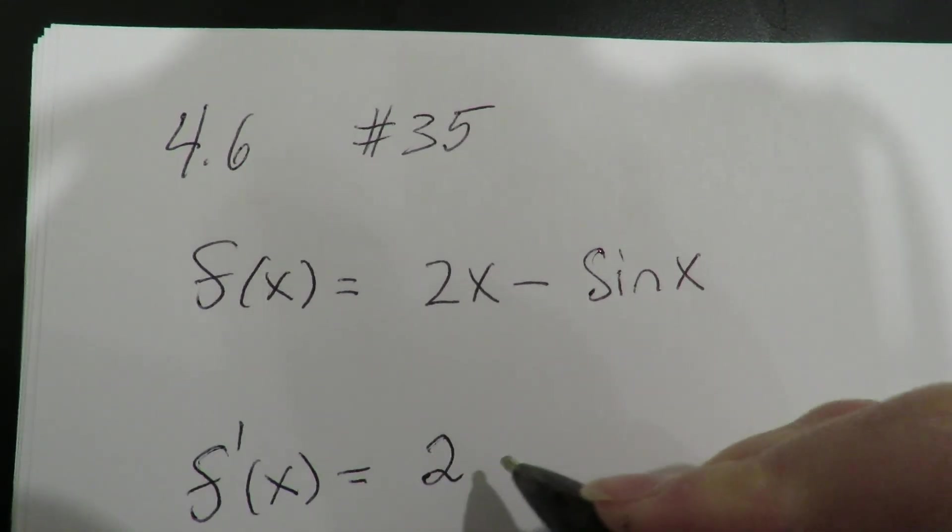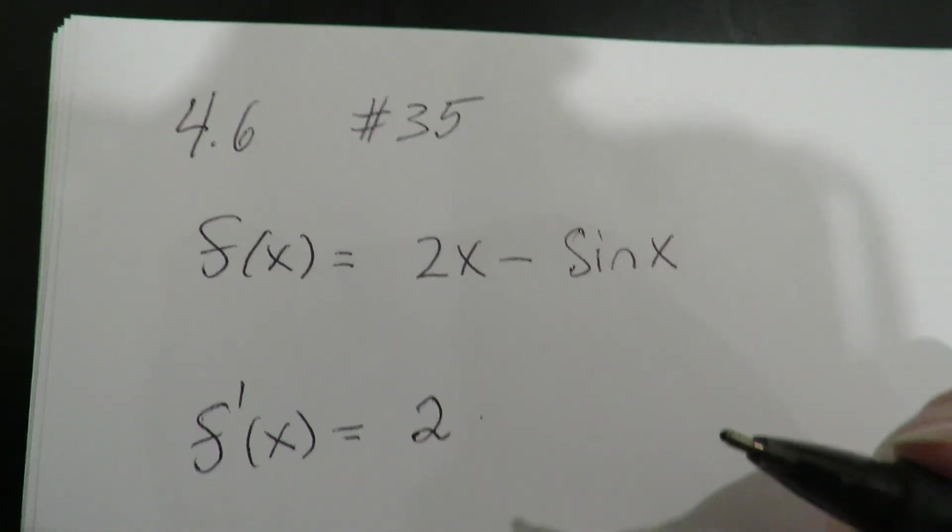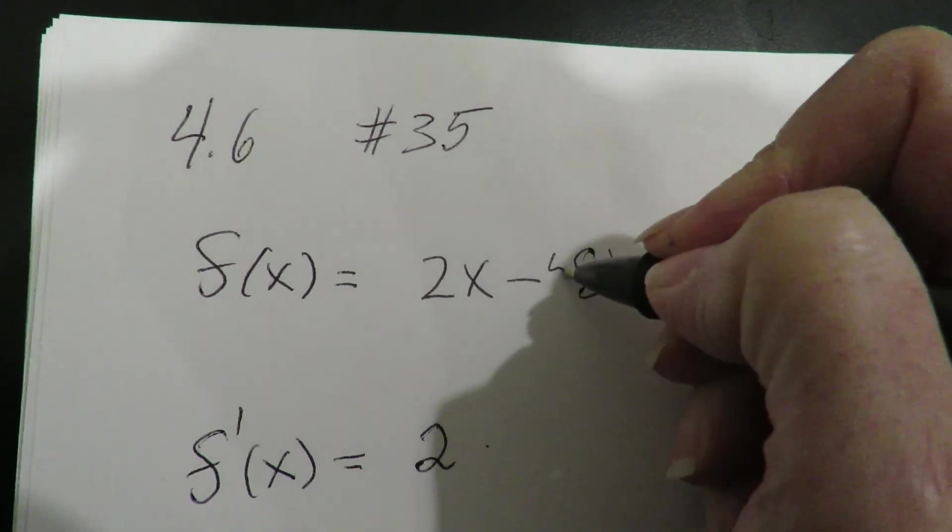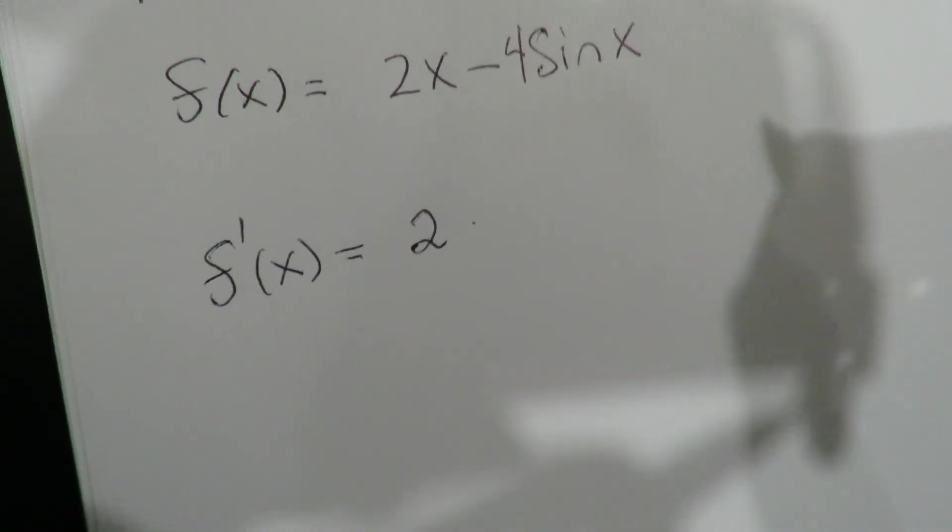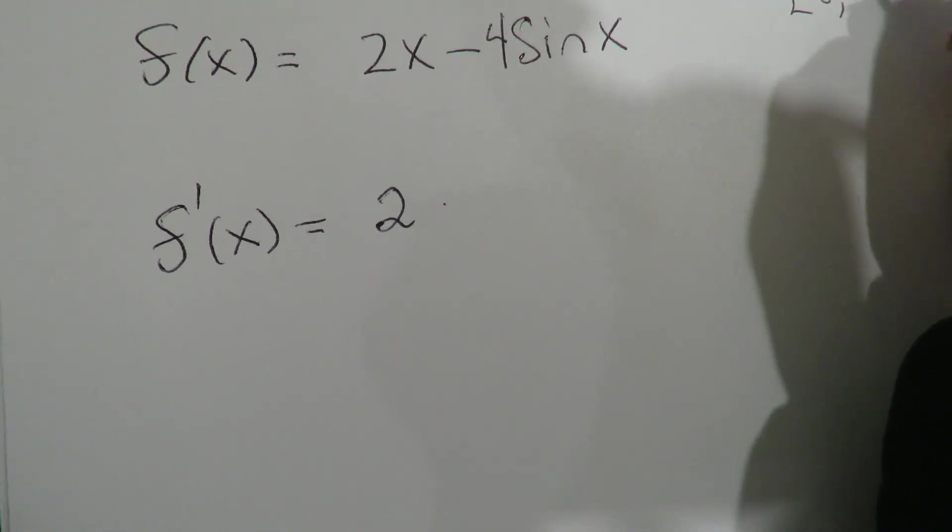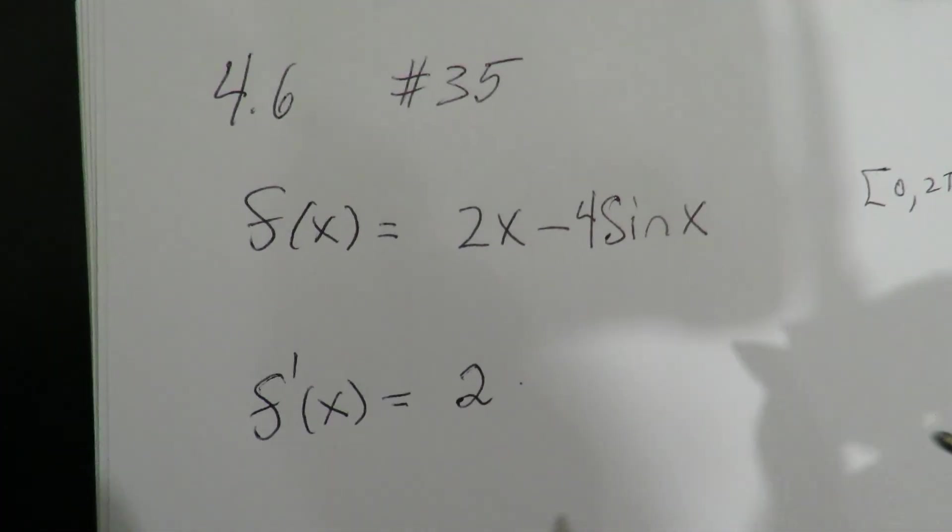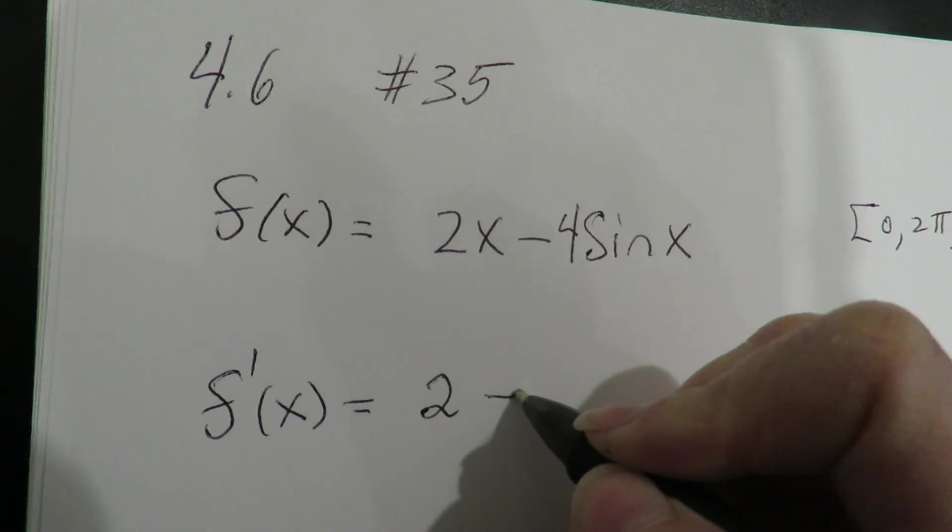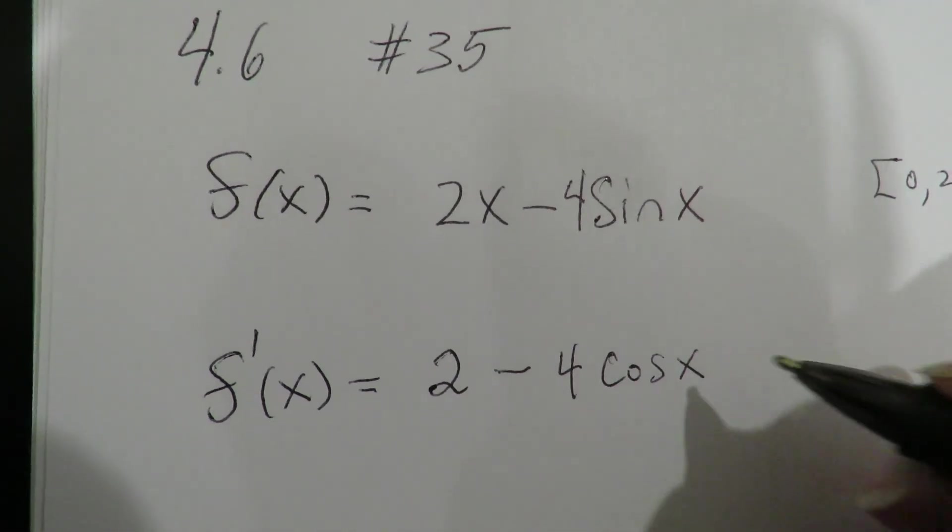Alright, so I'm taking the derivative of this. Did I write the question right? Oops, hold on a second, there's a 4 there. And it's on 0 to 2π. Okay, S'(x) = 2 - 4cos(x), okay.